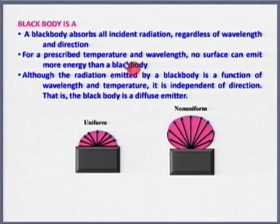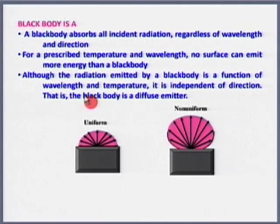For a prescribed temperature and wavelength, no surface can emit more energy than a black body. Although the radiation emitted by a black body is a function of wavelength and temperature, it is independent of direction — there is no directional sensitivity. So the black body is a diffuse emitter. These are the three key points: it absorbs all incident radiation, no body can emit more than a black body at a particular wavelength and temperature, and it has no directional preference.